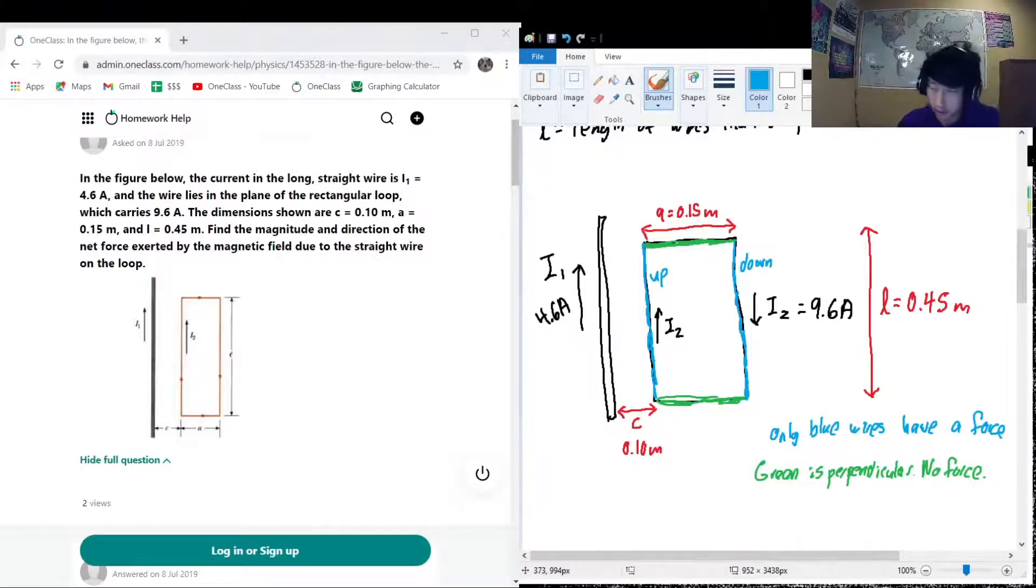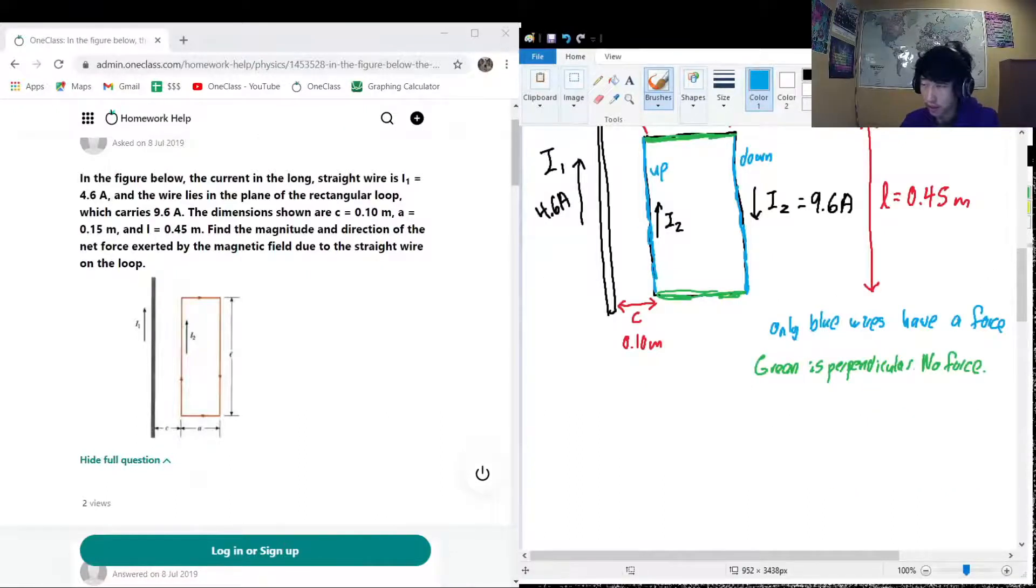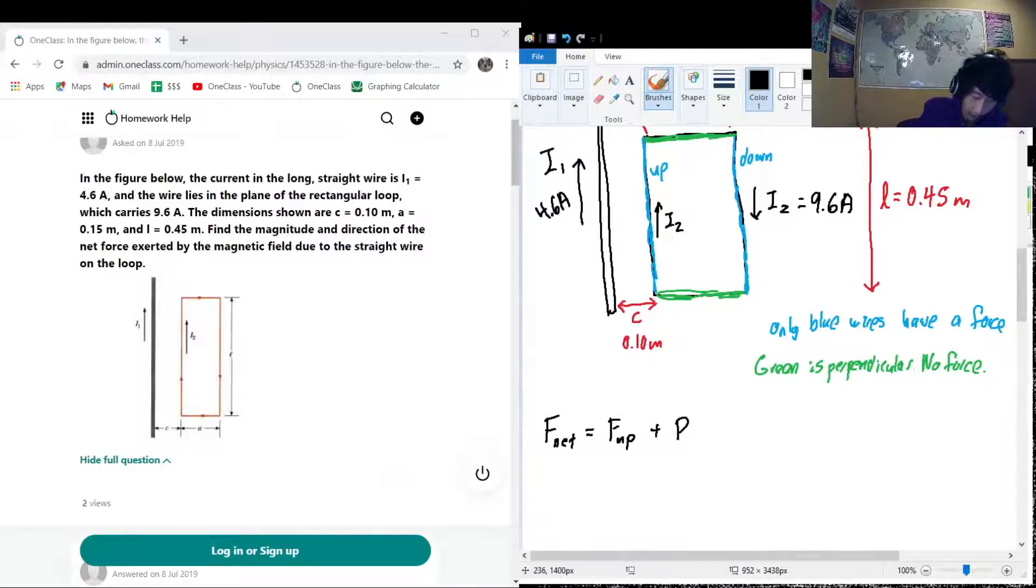Essentially what we want to do is we want to find the net force experienced by this rectangle. So the net force of the rectangle, let's call it f net, is going to be equal to the force experienced by f up, that's the force experienced just by the upwards branch, plus f down. The force between them, that's going to be the total net force experienced between them, because it's only going to be the up section and the down section that contribute to the net force.